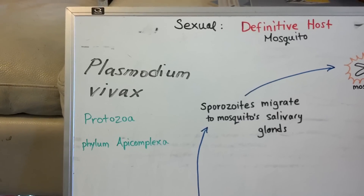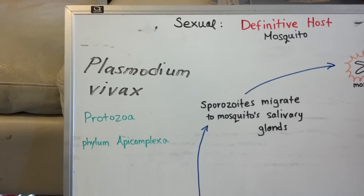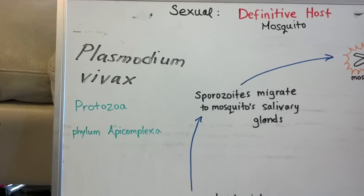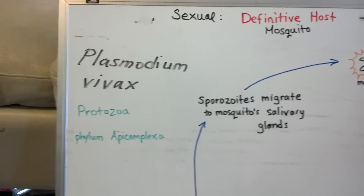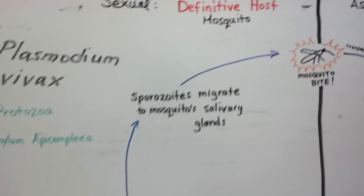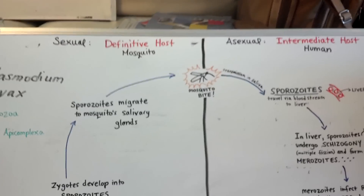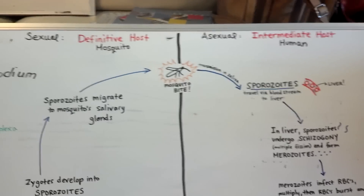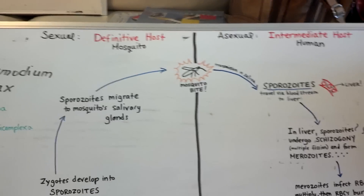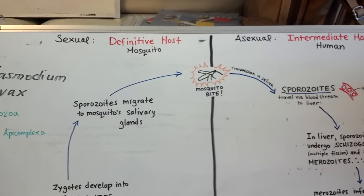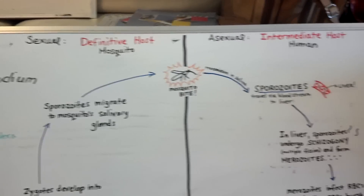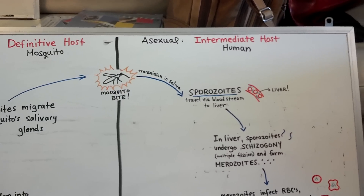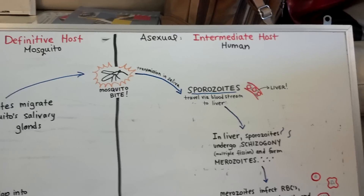This is the life cycle of Plasmodium vivax, which is a protozoa from the phylum Apicomplexa, and it is what causes malaria. It has two hosts: the definitive host and the intermediate host. The definitive host is where sexual reproduction takes place, and this is the mosquito. The intermediate host is where asexual reproduction takes place, and in this case it's the human.